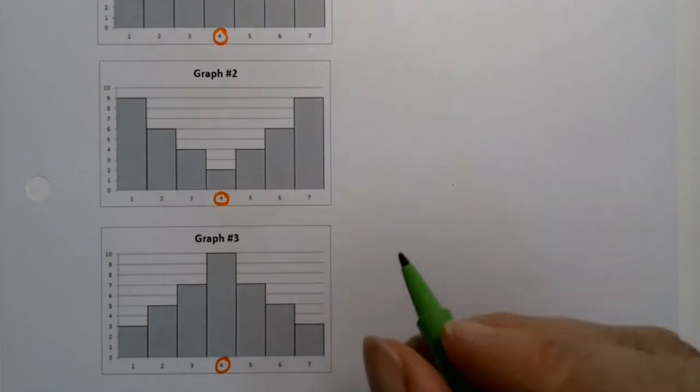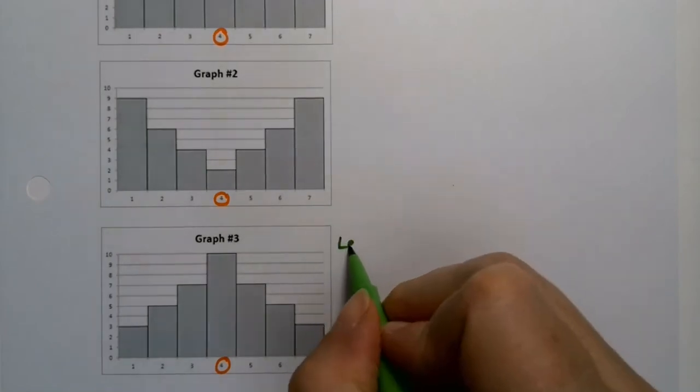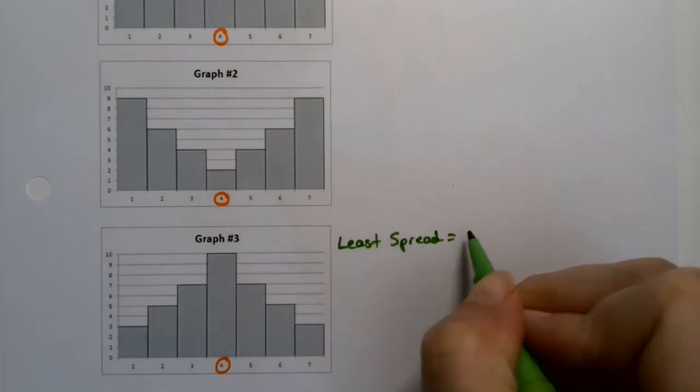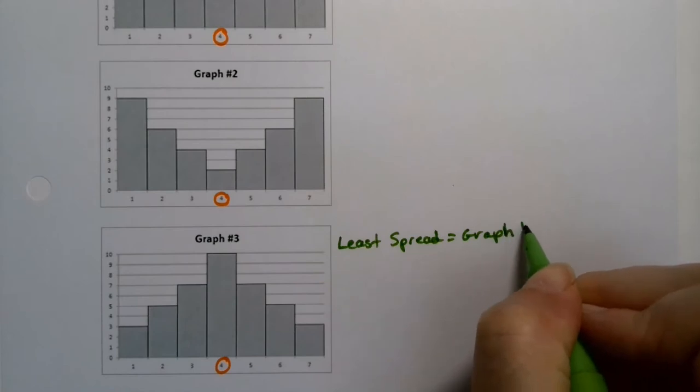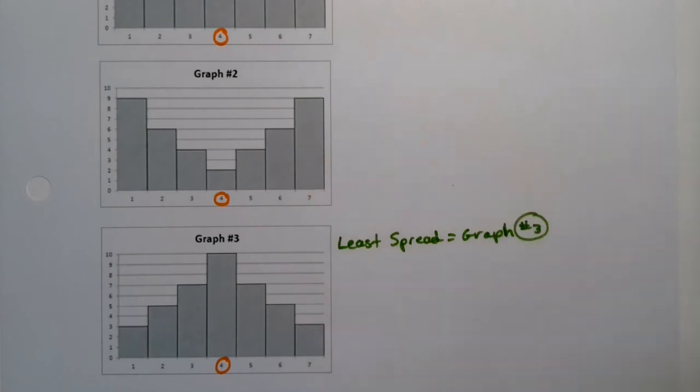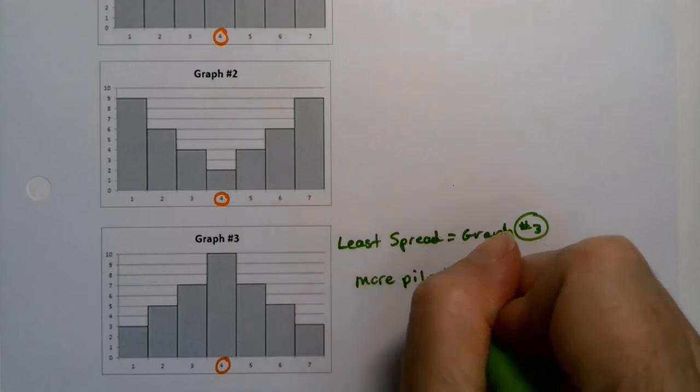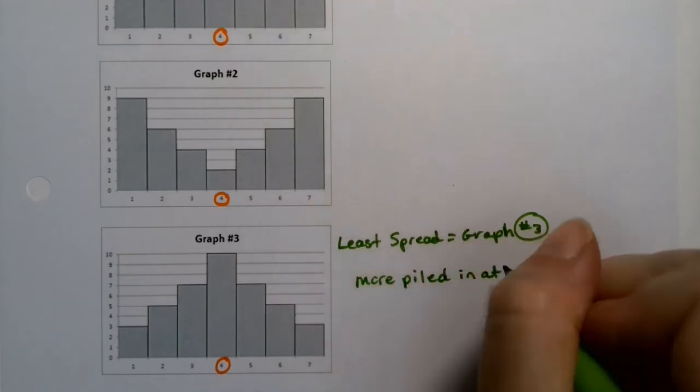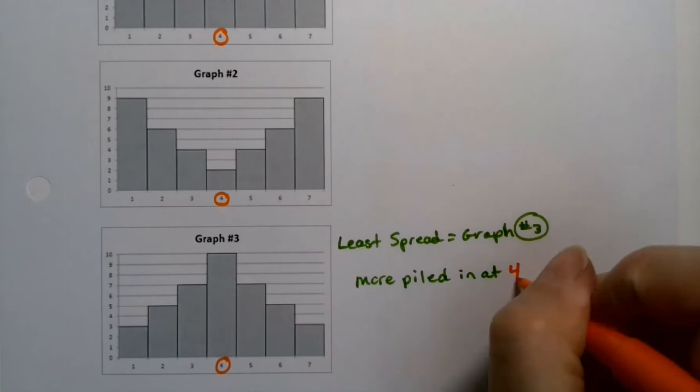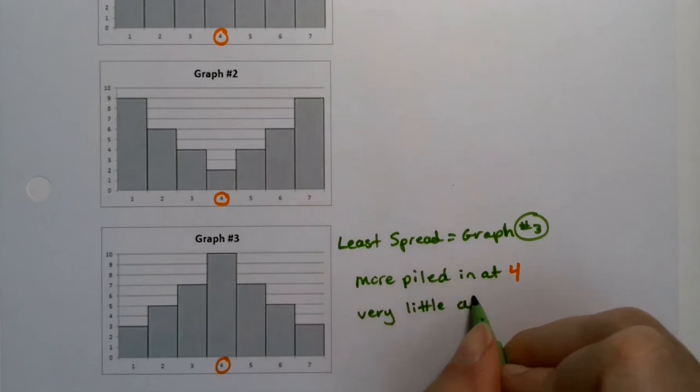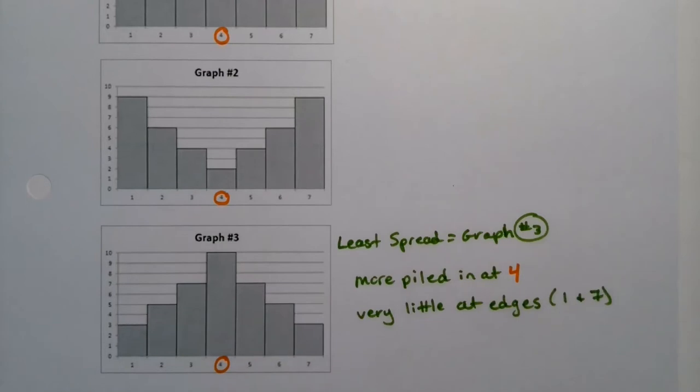So the least spread is graph number three. It has more piled in the center, which is four, and very little at the edges of one and seven. All right, so this is the least spread out graph.